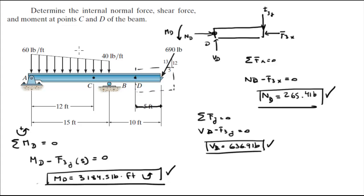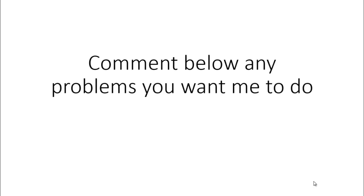The only complicated part was at point C, where the cut falls within the distributed load region. The key trick is recognizing that the small triangle at the cut has the same angle theta as the larger triangle — that's what allows you to find the new height. Please comment below if you want me to do any problems, and I'll be happy to help. Thank you.